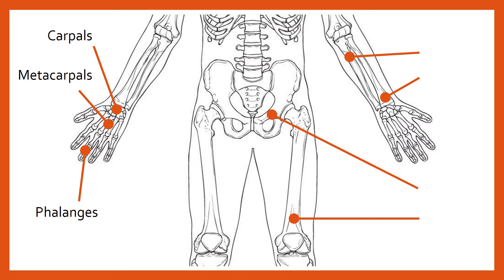In the lower arm there are two bones: one called the ulna and one called the radius. The radius is the one that ends on the thumb side — that's the best way to remember it — because no matter which way you turn your hand, whether it's supinated or pronated, the radius will always be the bone that ends on the thumb side of the hand.